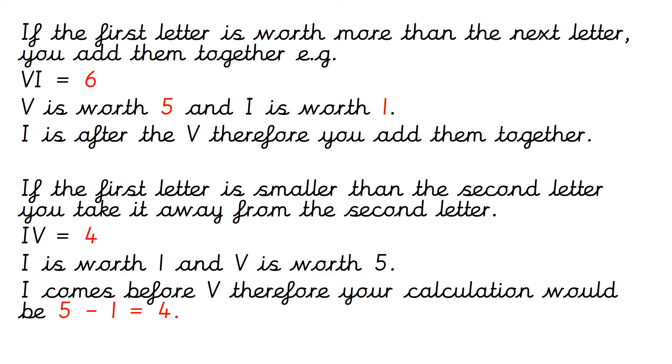So if the first letter is worth more than the next letter, you add them together. For example, VI is equal to 6. V is worth 5 and I is worth 1. The I is after the V, so this means that you add them together. So can you see how your larger number is at the beginning? So you add them together.